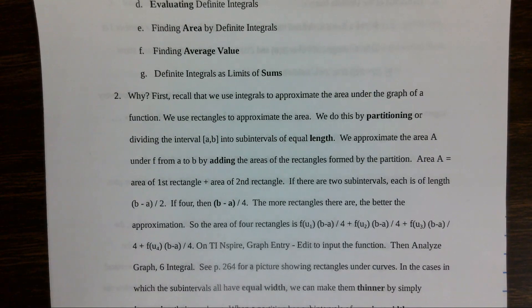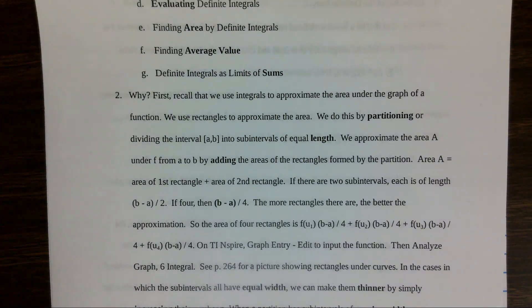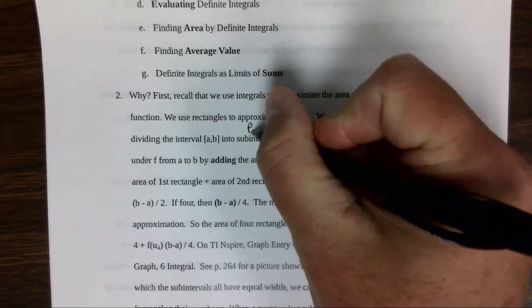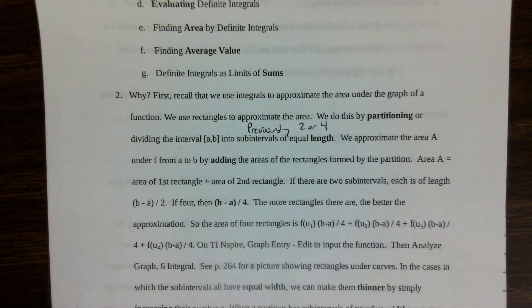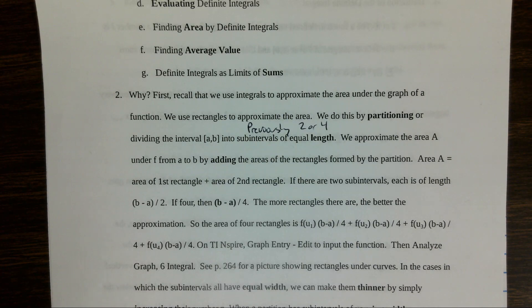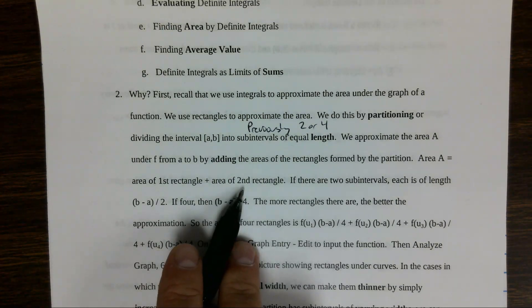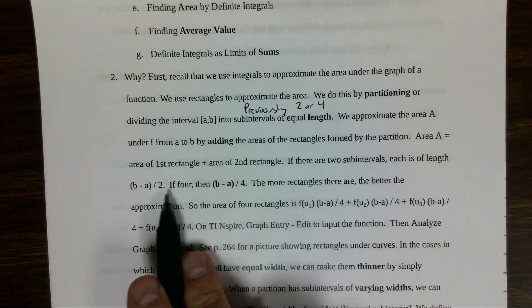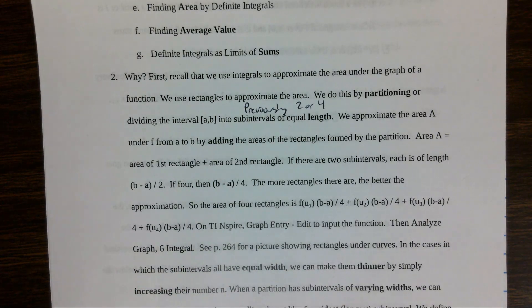We use integrals to approximate the area under the graph of a function using rectangles. We do this by partitioning or dividing the interval into sub-intervals of equal length. Previously we usually used two or four rectangles. We approximate the area by adding the areas of the rectangles — each has length b minus a over 2 if there are two, or b minus a over 4 if there are four. The more rectangles, the better the approximation.